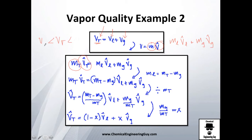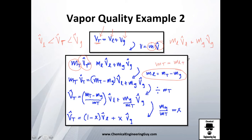The specific volume of the liquid will be much lower than that of the mixture, and that of the gas is the greatest. We have total mass = mass of liquid + mass of gas. If I want to isolate the mass of liquid, I subtract the mass of gas from total mass, and I'm going to substitute that in.